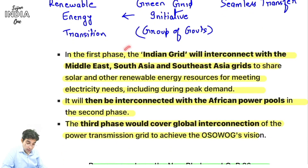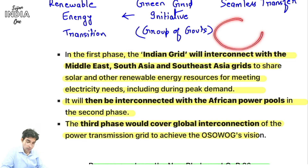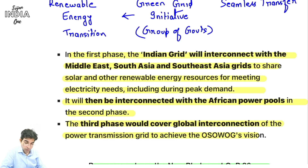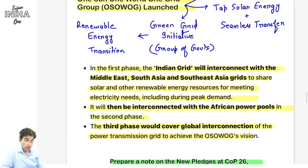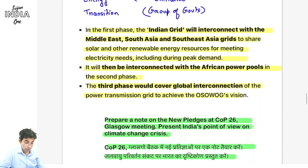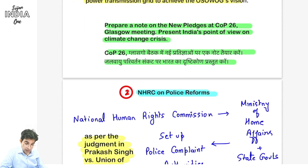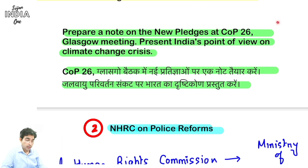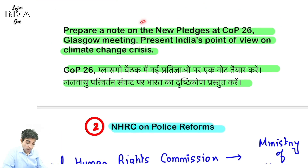Is mein teen phases hain. Pehle phase mein Indian grid interconnect karega Middle East, South Asia, South East Asian grid ko. The point is ek saath poore world ko nahi - pehle chhota plan banate hain, South Asia connect karte hain, fir gradually isko poore world mein aage badhayenge, fir Africa ko lo, fir third mein poore world ko connect karo. The idea is we need to make a grid - One Sun, One World, One Grid. Toh yeh toh tha pledges jo li gayi COP26 mein.